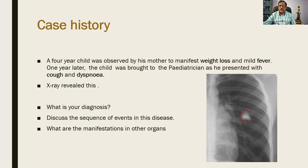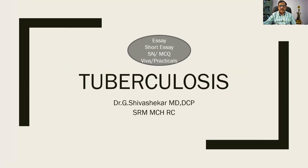What are the manifestations in other organs? I hope you will be able to narrow down the diagnosis or even come to the exact diagnosis. The lesion here is circled. The diagnosis is tuberculosis. It can come as an essay, a short essay, a short note, an MCQ, and even viva and practicals.